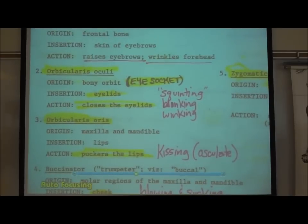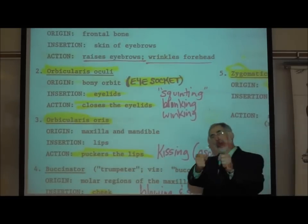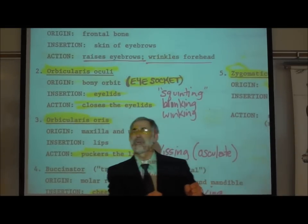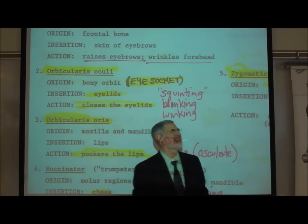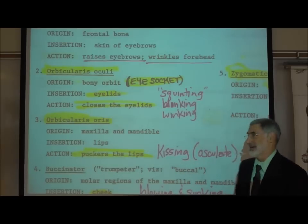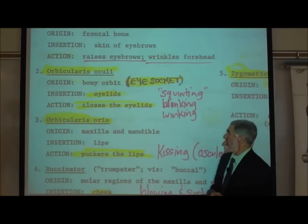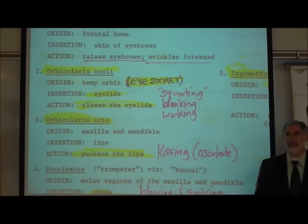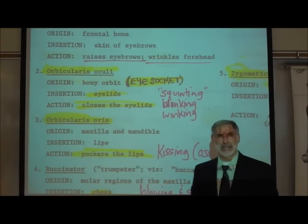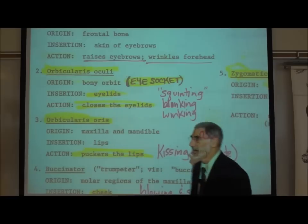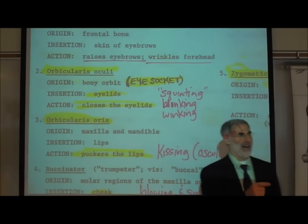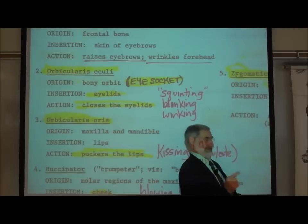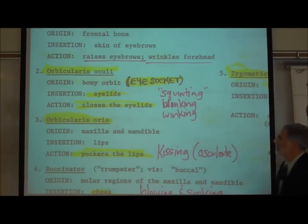If you're driving into the bright sun, we tend to squint to reduce the glare — we close our eyelids most of the way but not completely. Blinking is both eyes; sometimes people blink when they're nervous. Winking is just using one eye — you wink at somebody. So that's the orbicularis oculi, this circular shaped muscle right here.